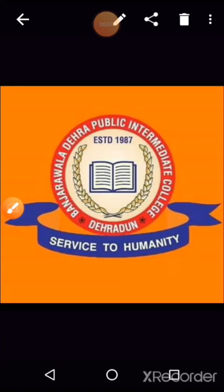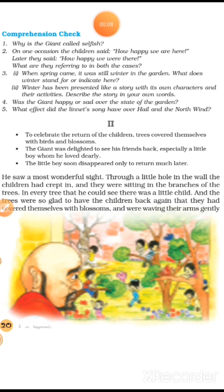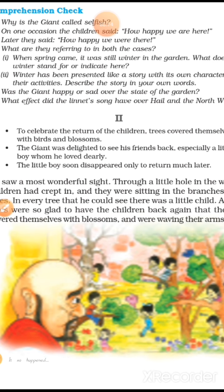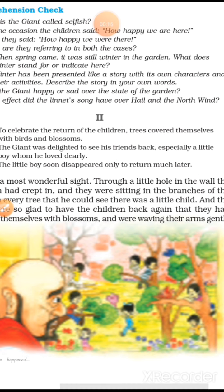Hello everyone, today we will start the second part of the chapter, The Selfish Giant. In this part we are going to read about celebrating the return of the children — trees cover themselves with birds and blossoms. Jahaan pe children returned hote hain garden mein aur dubara se trees blossom hona shuru ho jate hain aur birds start to singing.